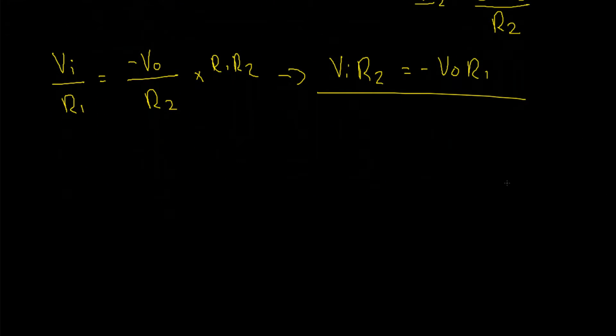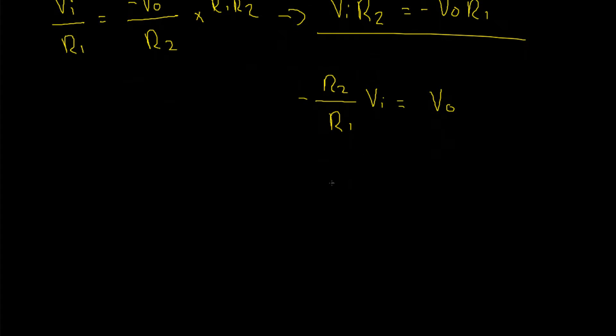Okay, so we are getting a little bit closer now. Let's see if we can find VO divided by VI. We can divide through by negative R1 to remove that negative and R1 from the VO. So this gives us R2 divided by negative R1 times VI equals Vout. Then we can divide through by VI and we have ourselves our final equation: VO divided by VI equals negative R2 divided by R1.